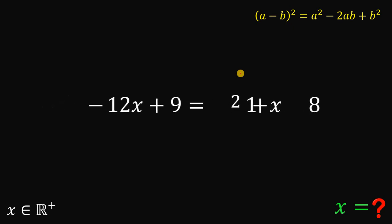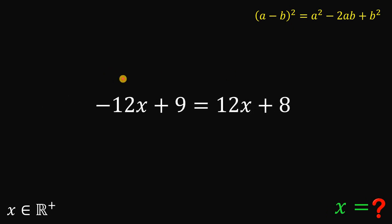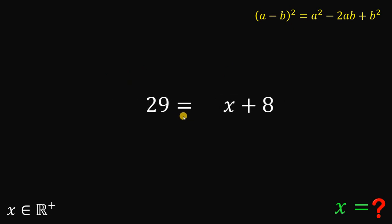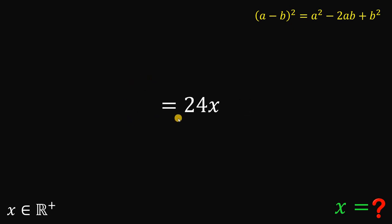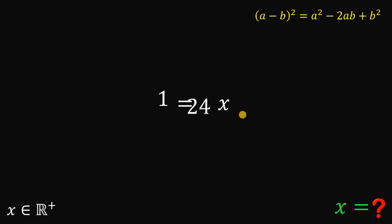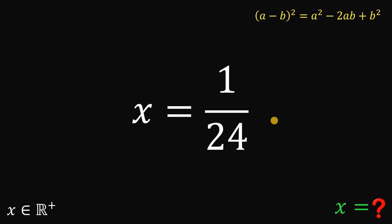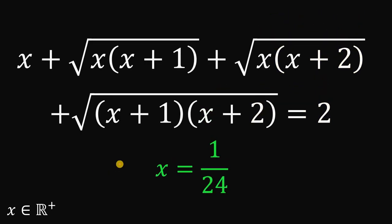Now let's subtract 4x squared from both sides — all 4x squared terms cancel to 0. Next, let's add 12x on both sides, giving us 9 equals 24x plus 8. Then subtract 8 from both sides, so we have 1 equals 24x. Finally, to solve for x, divide both sides by 24. That is the only real value of x. Therefore, our answer is x equals 1 over 24.